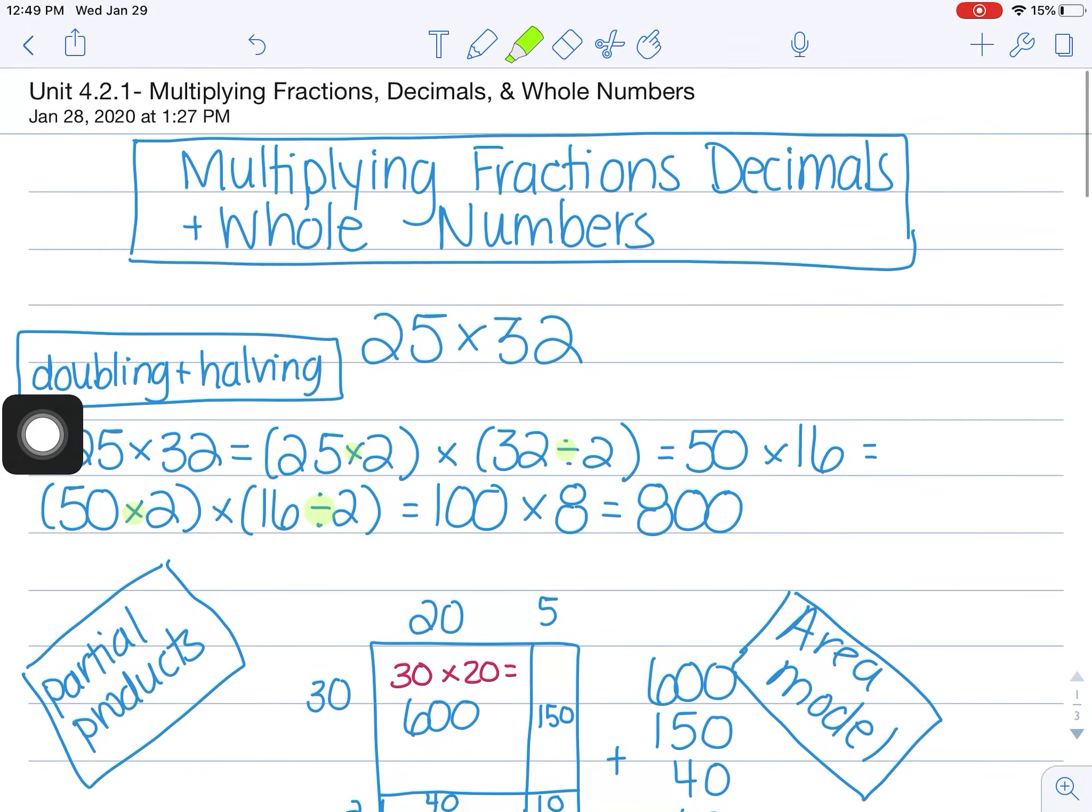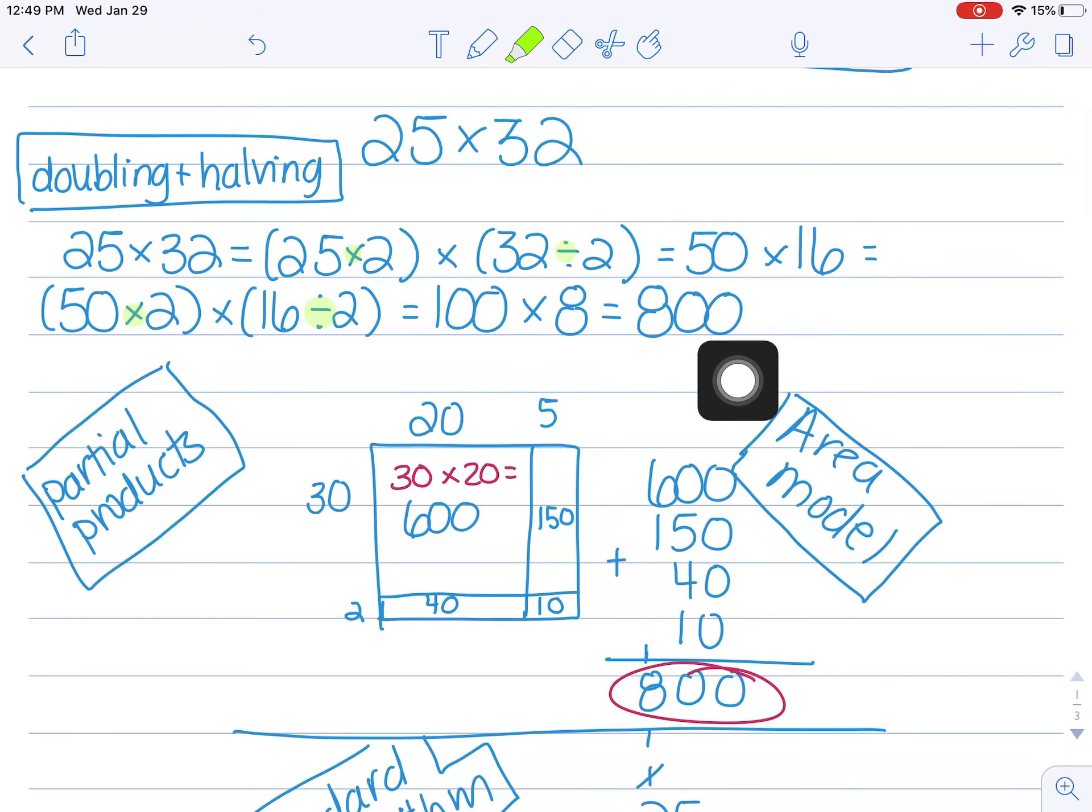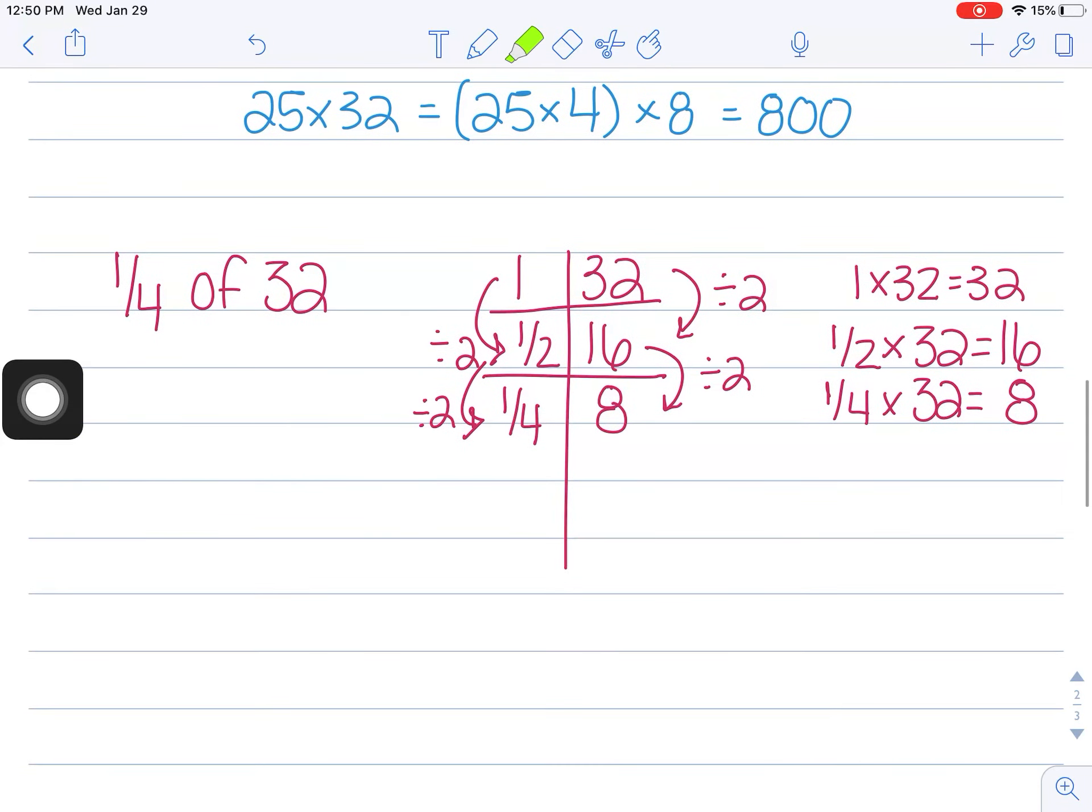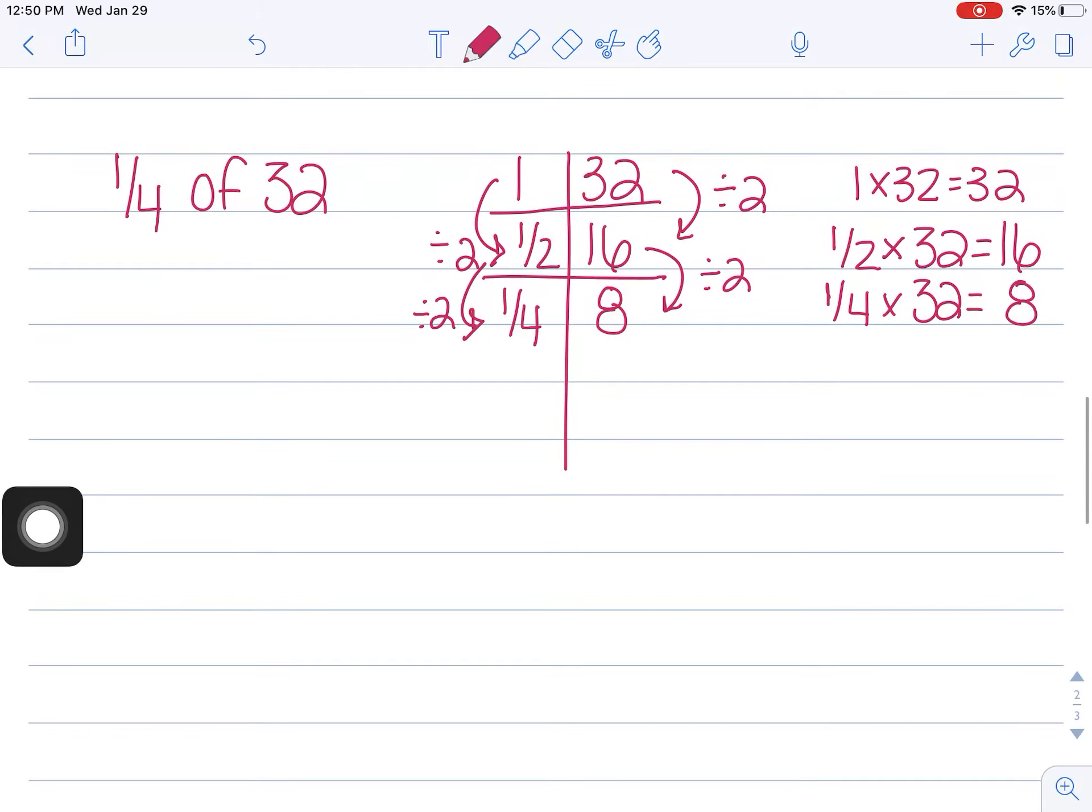Interestingly enough, our original problem was 25 times 32, which was 800. So this, a fourth of 32, is 100 times less. Interesting relationship.